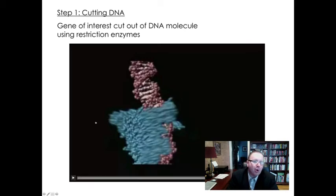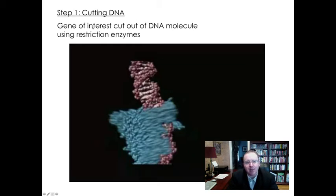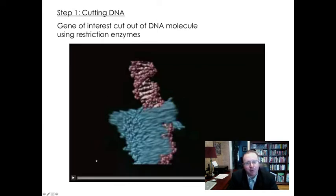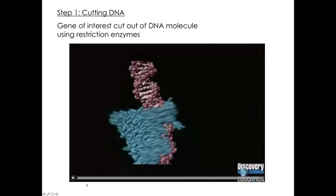Step one is cutting the DNA, and we're going to cut two different pieces of DNA. We begin by cutting what's called the gene of interest out of the DNA molecule where it's found, using something called a restriction enzyme. The gene of interest is whatever gene you eventually want to end up as your product. Restriction enzymes are bacterial enzymes that will cut sequences of DNA in particular locations. I'm going to play a video about the discovery and utility of restriction enzymes.